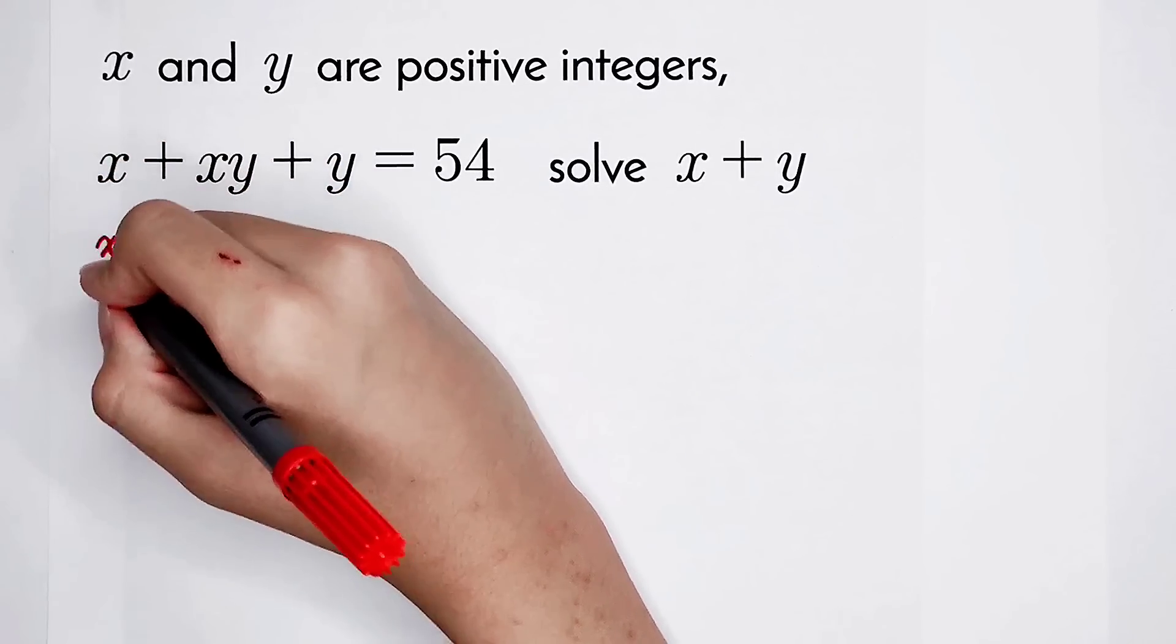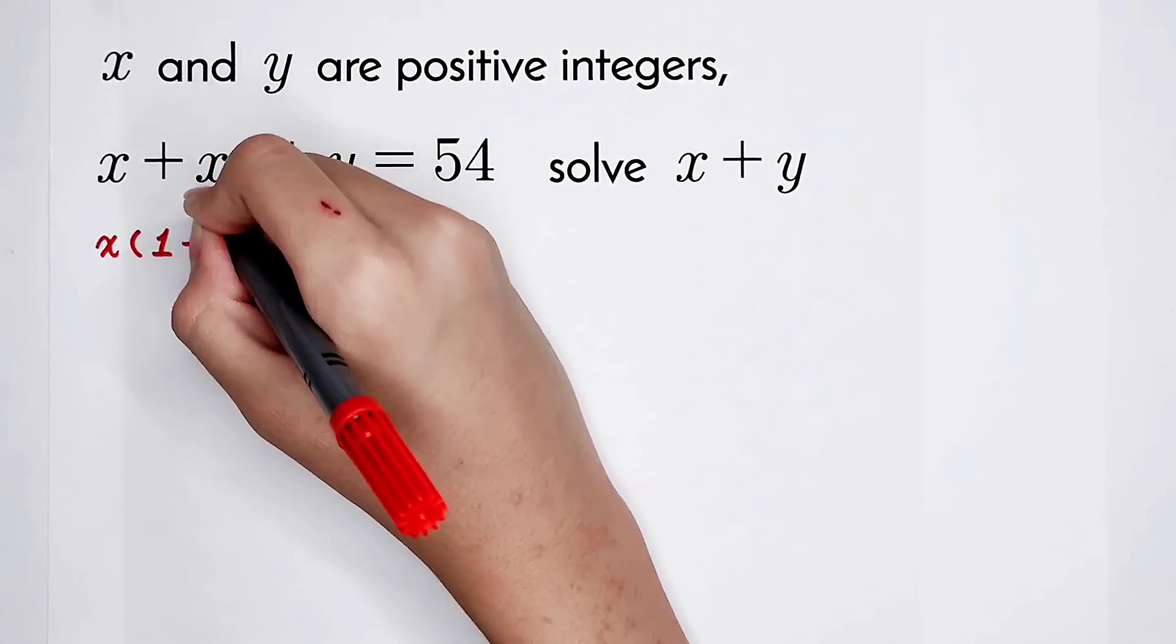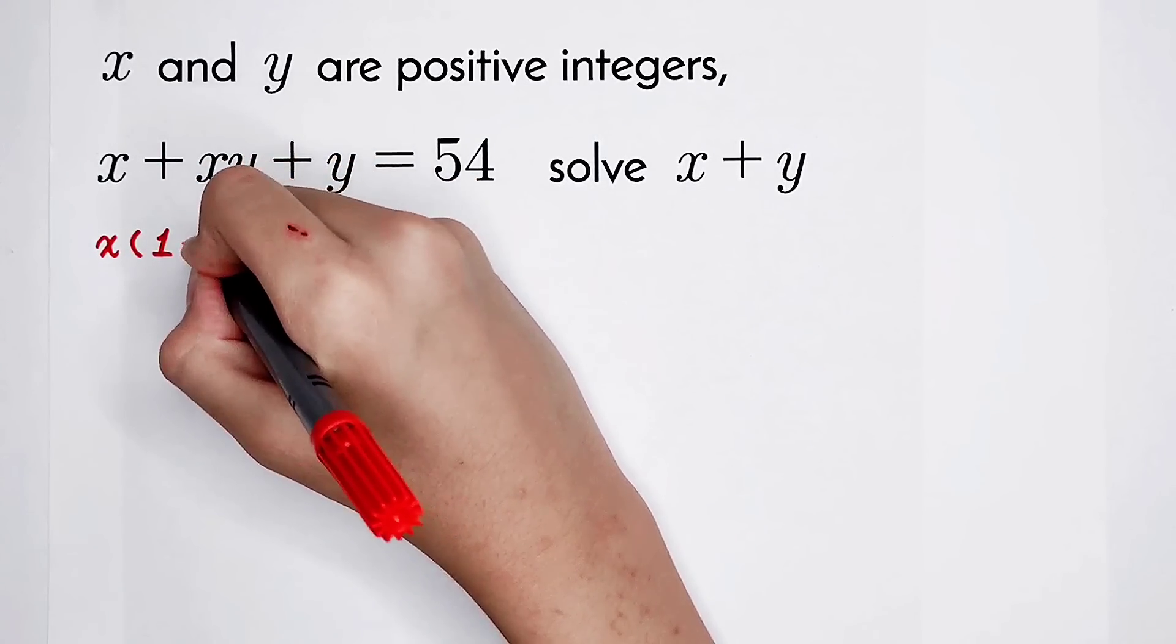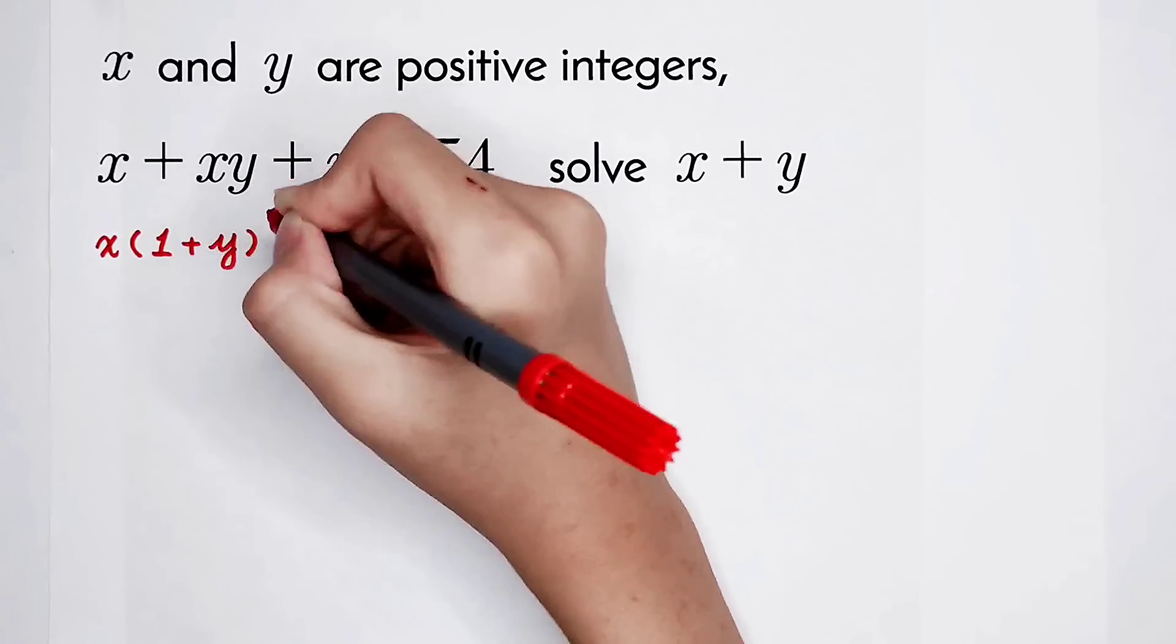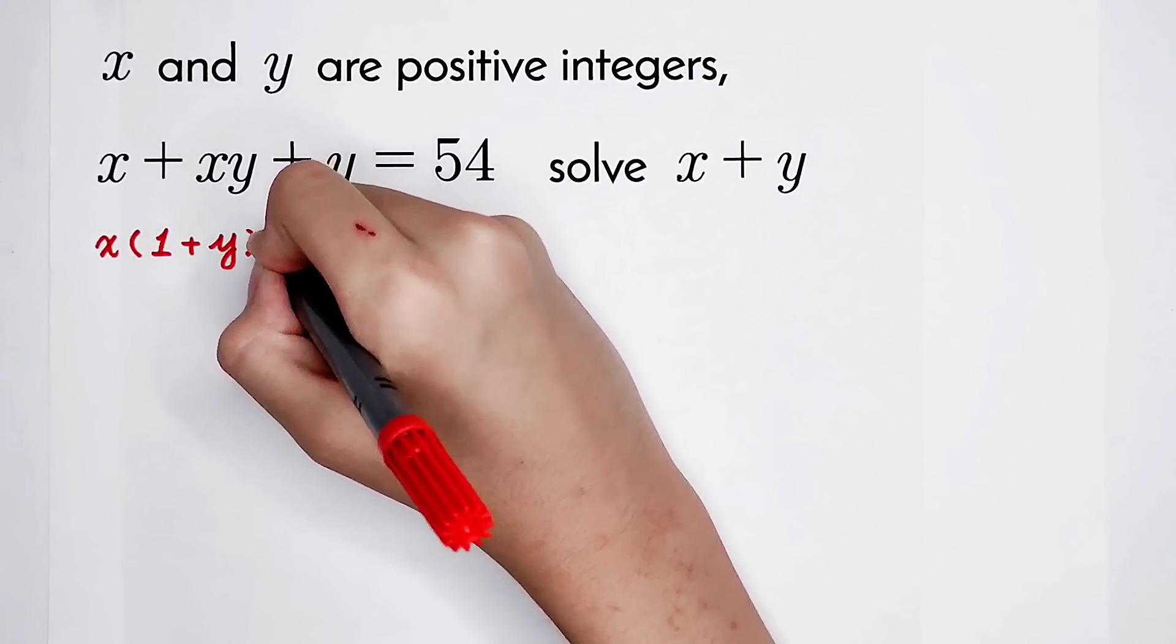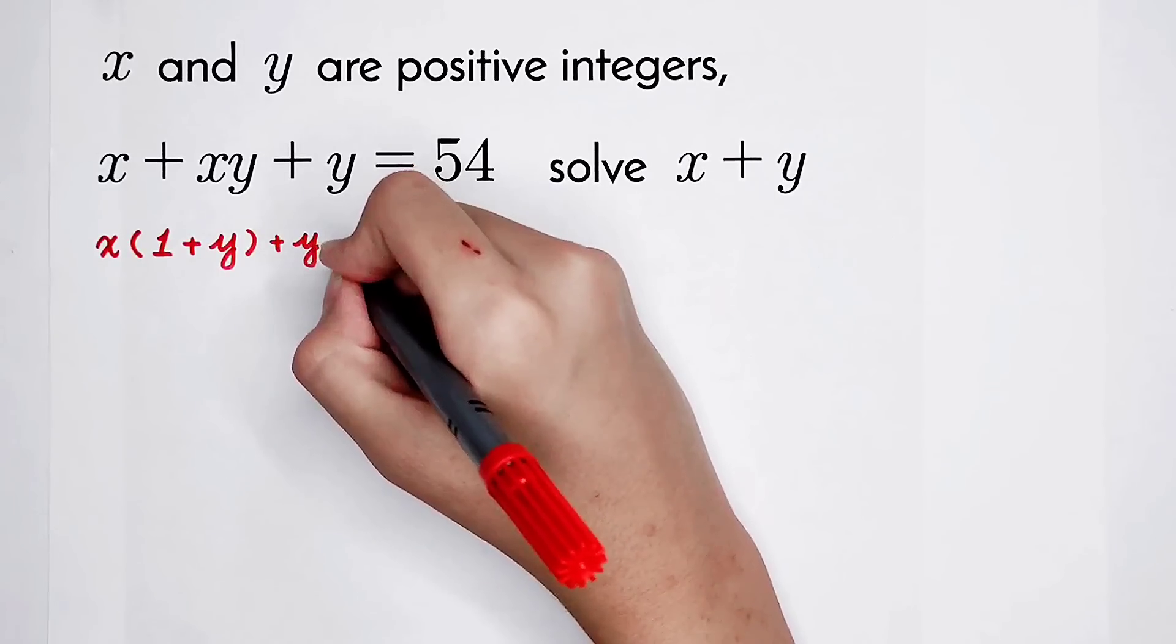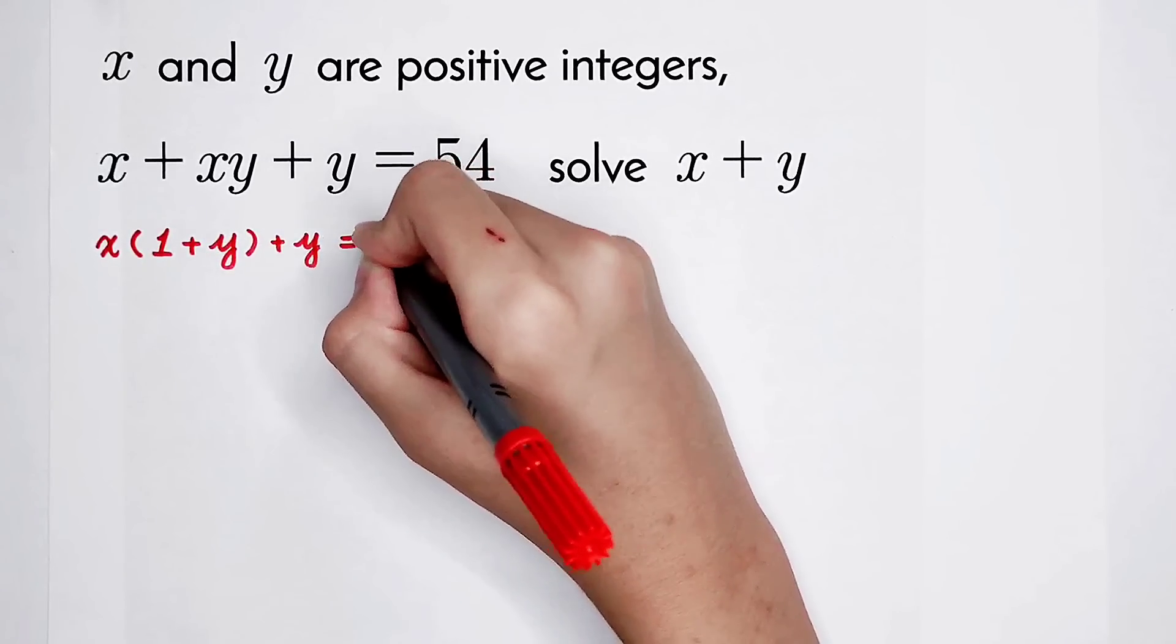And here, x divided by x is 1, and here, x times y divided by x is y. But no, we're sad. Because here, there is a y left on the left hand side.